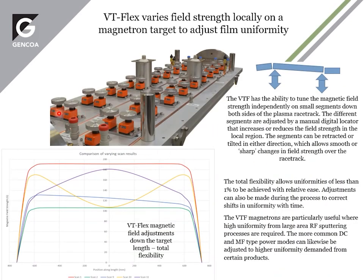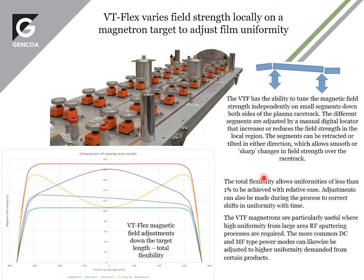The VT Flex is a variable magnetron which moves individual poles down both sides of the magnetron to either tilt or retract, creating a means to change the magnetic profile at will along the target length. We can go from a flat uniform low-strength field to a high-strength field, tilt it from one side to the other gradually increasing or reducing the strength, or create concave or convex strength fields. This can be used to tune for much higher uniformity and also to counteract non-uniformity problems in large area RF plasma.